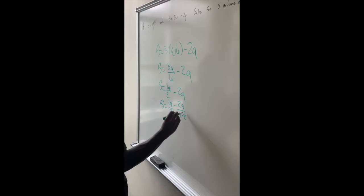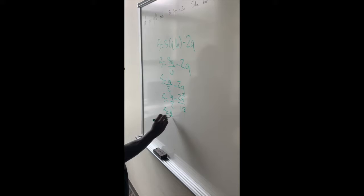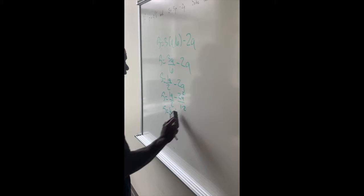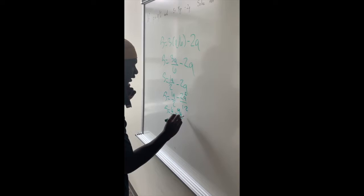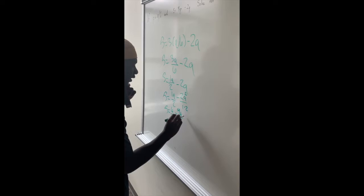It's a fraction, so we have to have a common denominator, so I'm going to multiply this by 2. So, we have S equals 1Q over 2 minus 4Q divided by 2, so then we have S equals negative 3Q over 2.